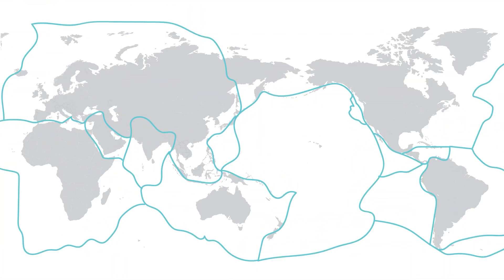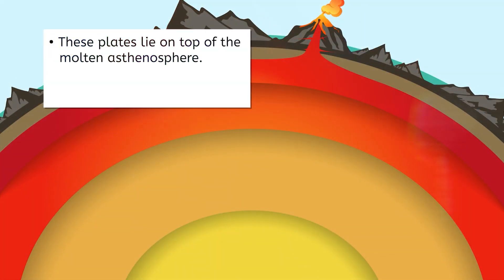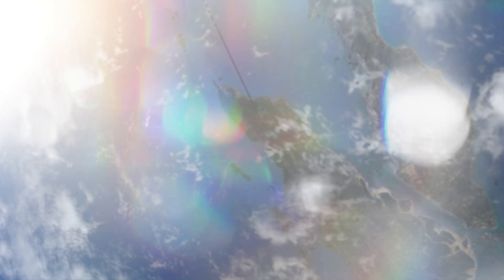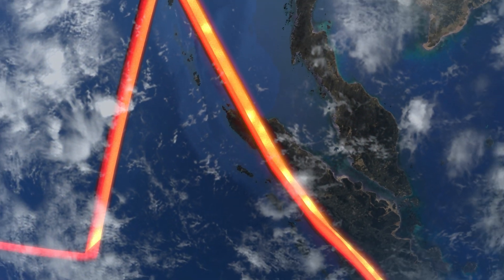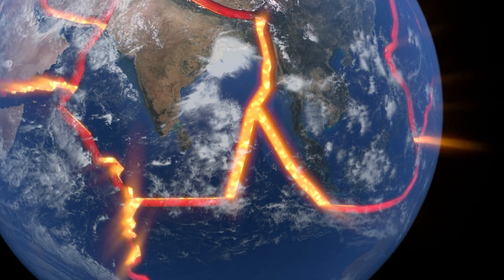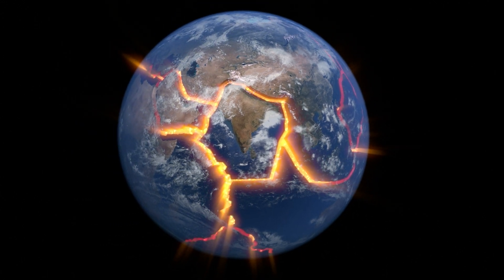As more evidence came to light, the theory of plate tectonics was born. This theory states that Earth's lithosphere is broken into large pieces called tectonic plates, numbering around 20 in total. These plates lie on top of the molten asthenosphere, where heat from Earth's core keeps the plates in motion. Essentially, Earth's lithosphere really is like one giant jigsaw puzzle, and it moves — with individual plates drifting about 2 to 15 centimeters per year.